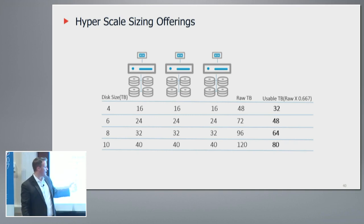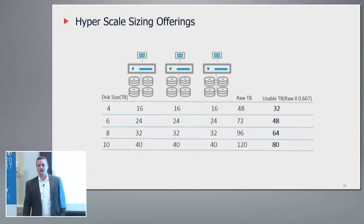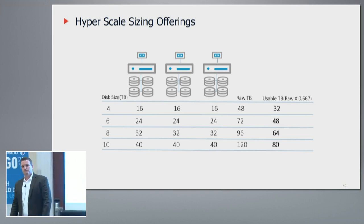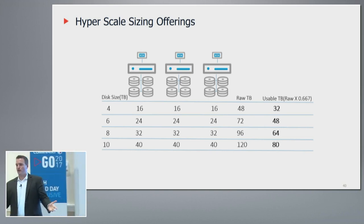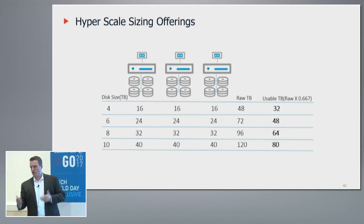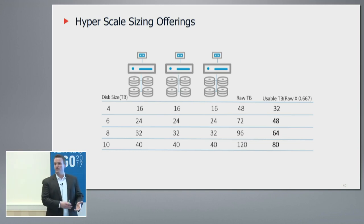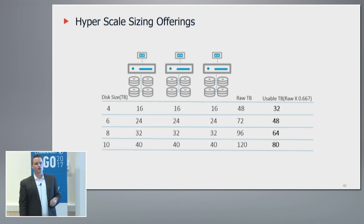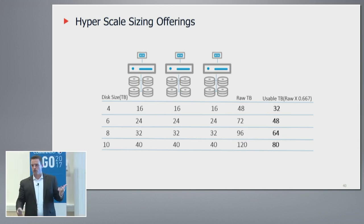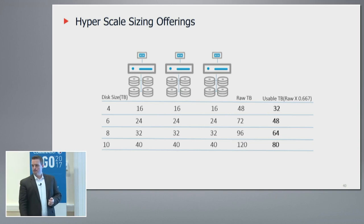The maximum with 10-terabyte drives in the appliance is 80TB. If you want bigger than that, you go with the Cisco reference architecture — a 12 or 24U chassis. And not just from a storage standpoint, but power, cooling, you name it. That's the configuration.